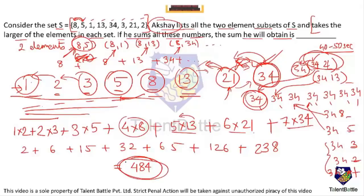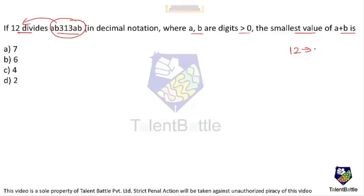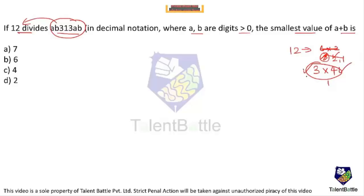Problem 3: If 12 divides AB313AB (in decimal notation), where A and B are digits greater than 0, find the smallest value of A + B. The divisibility test for 12: write 12 as a product of co-prime factors. 3 × 4 = 12 where GCD(3,4) = 1, so if a number is divisible by both 3 and 4, it is divisible by 12.